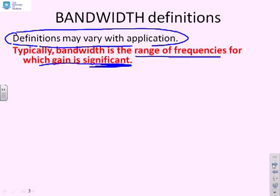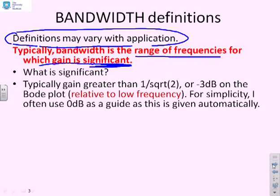So what is significant? Typically, you'll find a lot of books use a definition of 1 over square root of 2, or minus 3 decibels, as a definition of significant. This could be relative to low frequency gain, so we're talking about a 3dB drop-off compared to low frequency, or it could be absolute. Often you'll find that 0dB may be easier to read, and often minus 3dB and 0dB are pretty close together, so using either makes little difference.